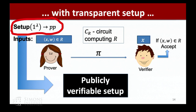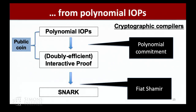Ideally we want a SNARK with a transparent setup, where there are no secrets in the setup, so everybody can publicly verify that the setup was done correctly. Unlike GGPR-based SNARKs where you have to trust that the setup was done correctly — for example in Zcash, and sometimes they even go wrong — if we don't have a trusted setup, then everybody can just run an algorithm to check that the setup was done correctly. The idea is to follow Uwalt's framework: use an information-theoretic object, namely a polynomial IOP, turn it into an efficient interactive proof using a polynomial commitment, then use the Fiat-Shamir transform on the public-coin protocol to compile it into a non-interactive proof — a SNARK.